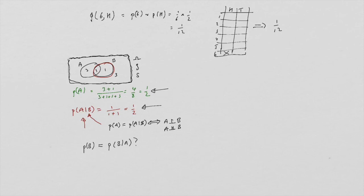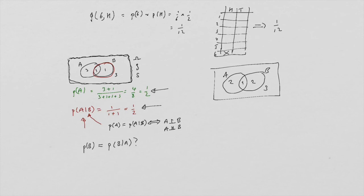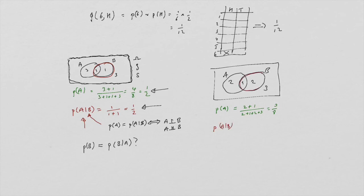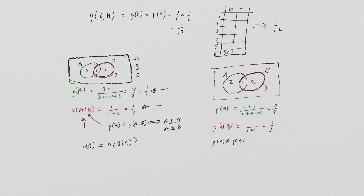Looking at the example that was not independent: P(A) is 2 plus 1 over 2 plus 1 plus 2 plus 3, which is 3 out of 8. But P(A|B) — restricting to just the B circle — is 1 out of 1 plus 2, which is 1 out of 3. Since P(A) ≠ P(A|B), A is not independent of B.